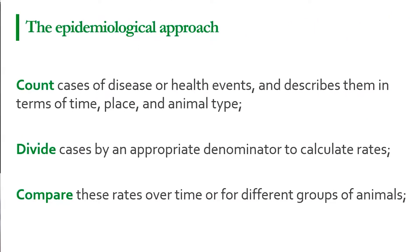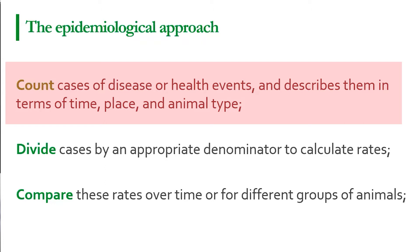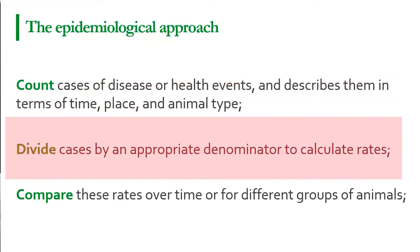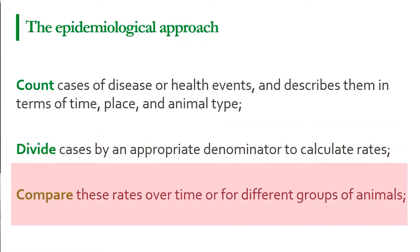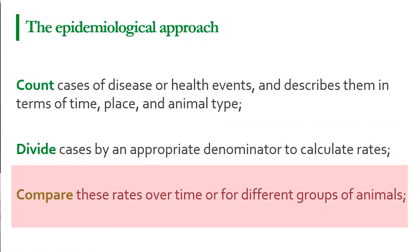The approach to these measures starts by counting the cases of a disease or health events, then describing them using the classical epidemiological triad: place, time, and animal type. When we have the counts and the populations, we divide the cases by the appropriate denominator to calculate specific rates, and then we compare those rates between different groups and subgroups to find what's going on with the measured effects.